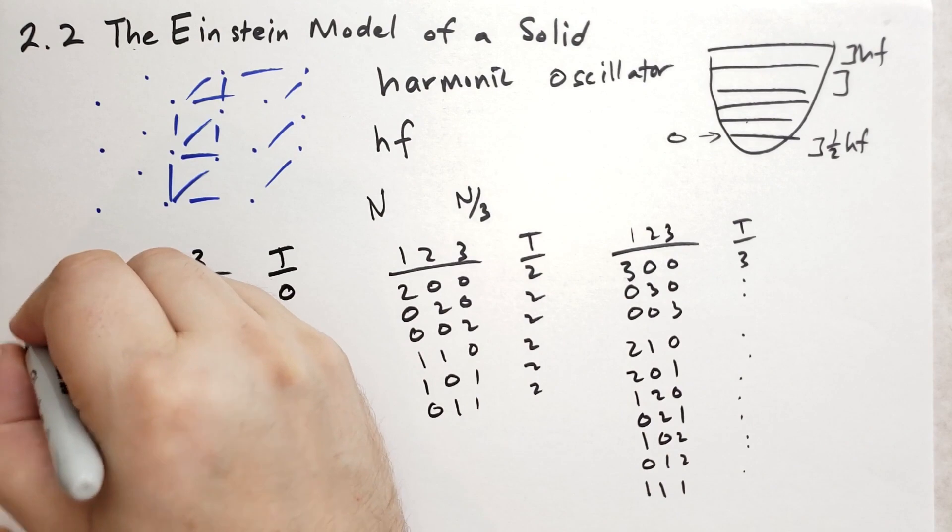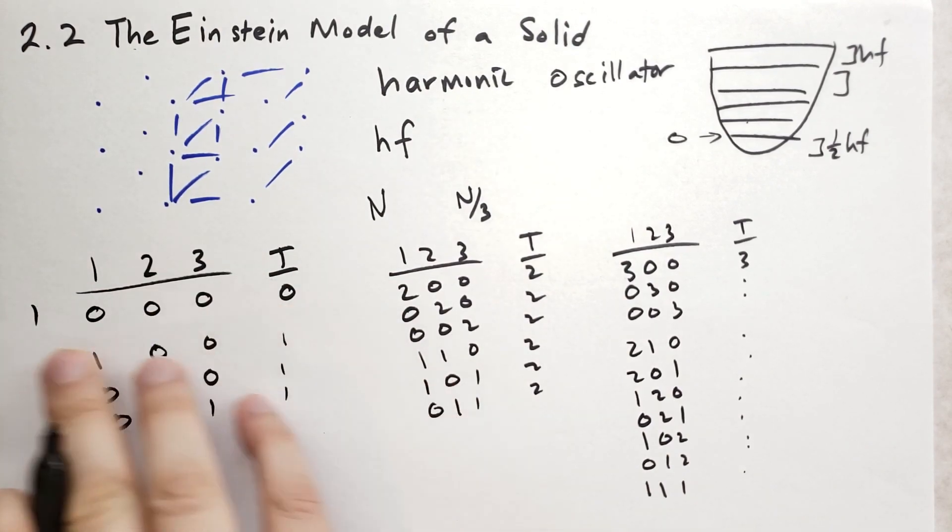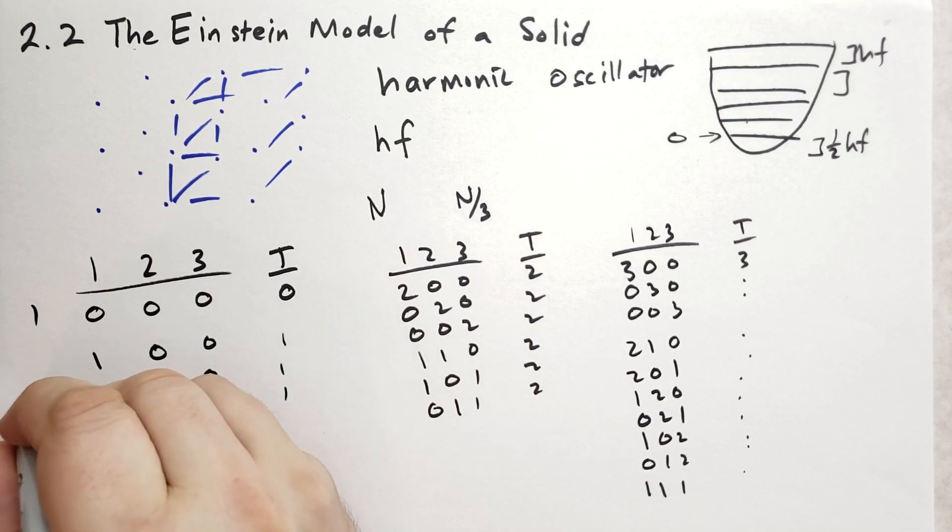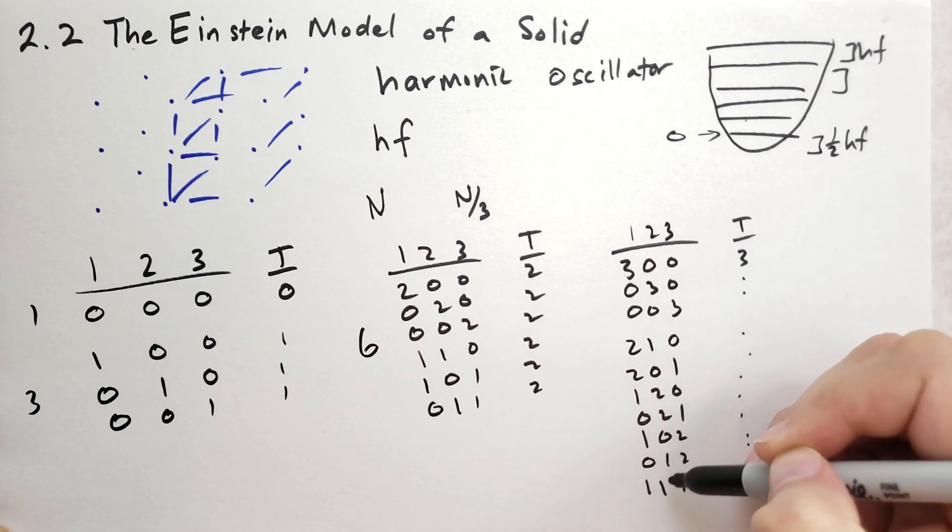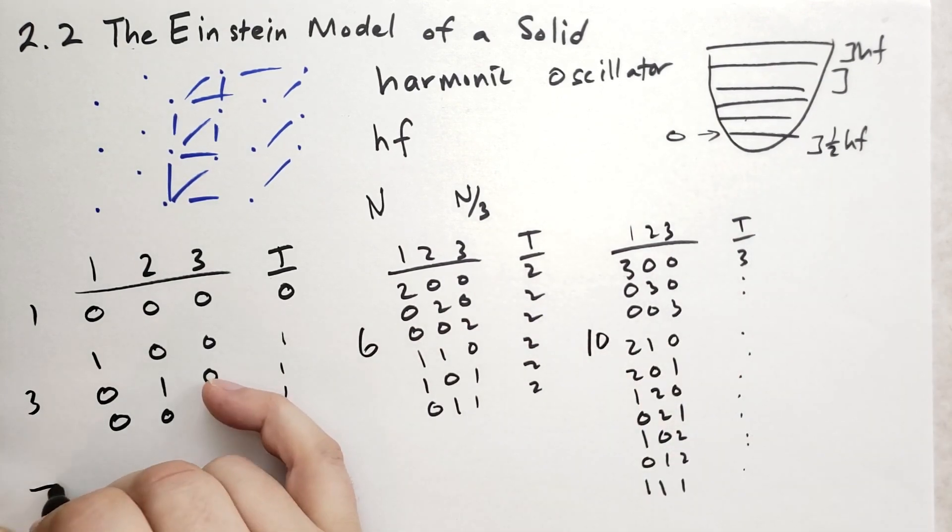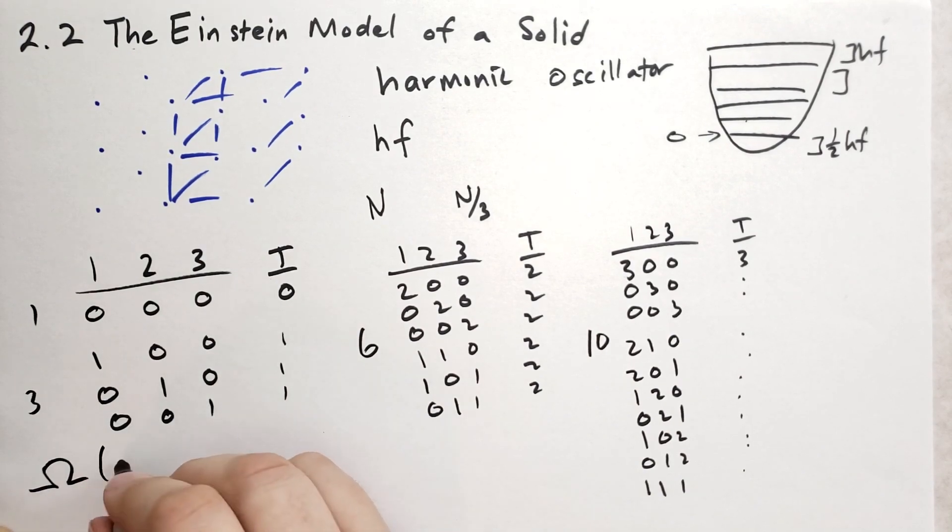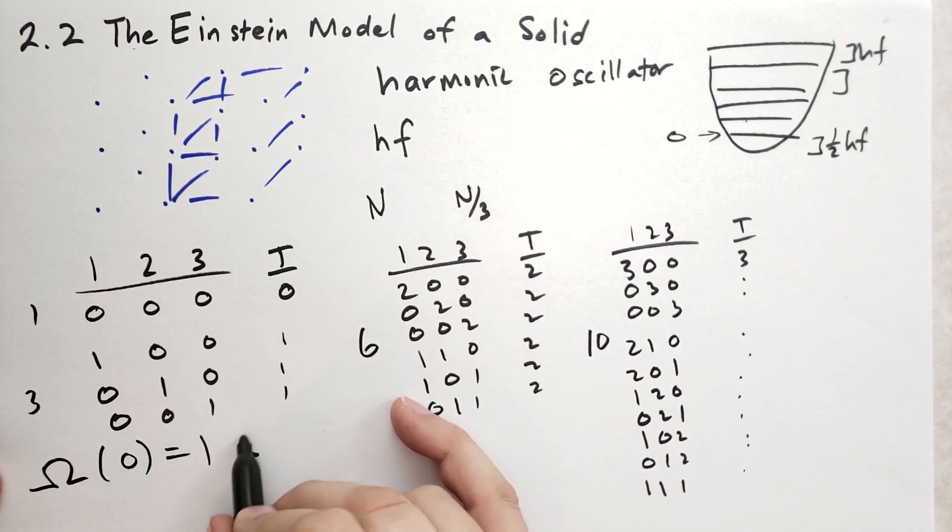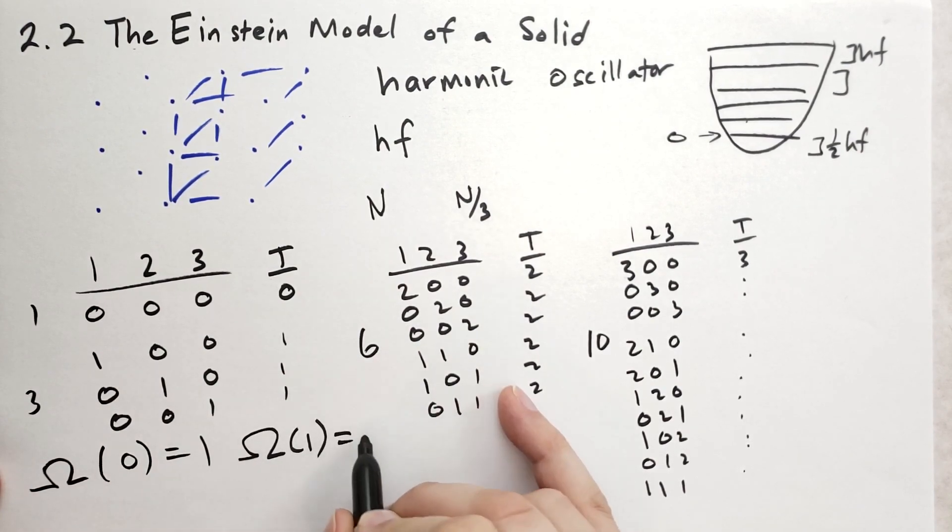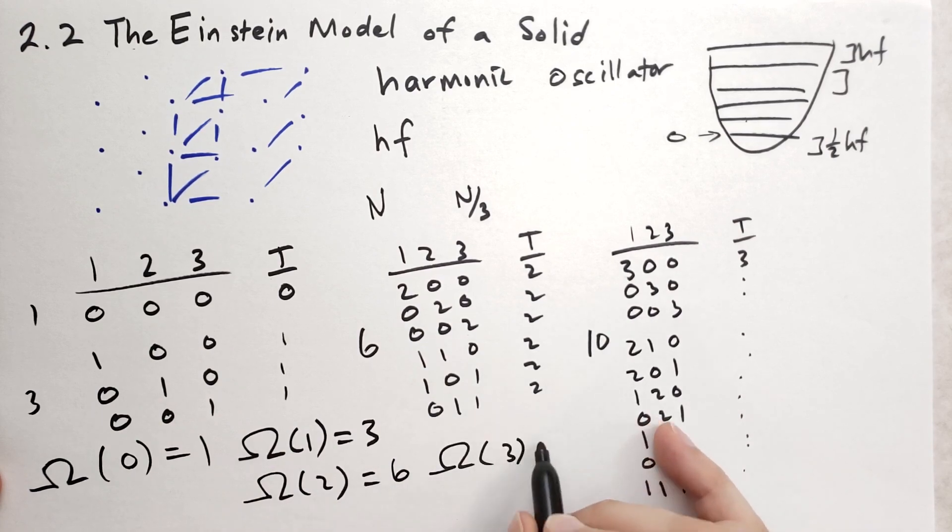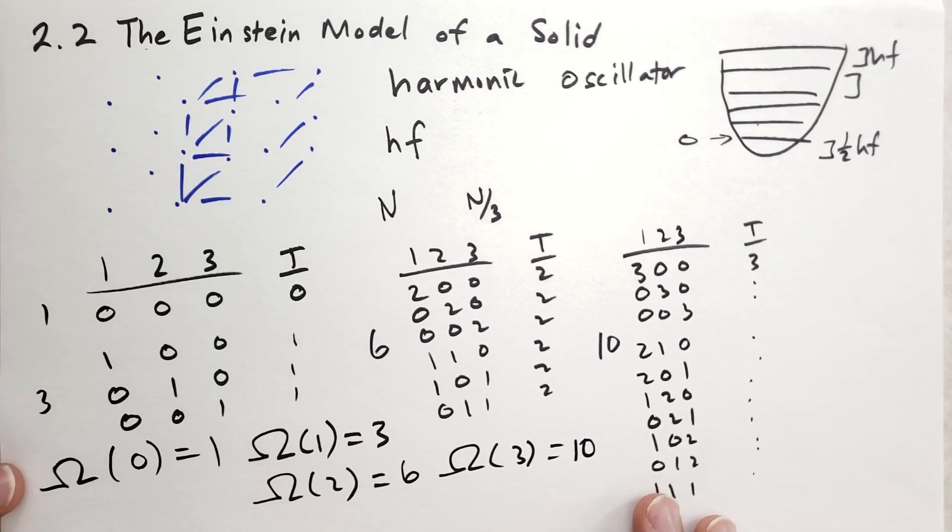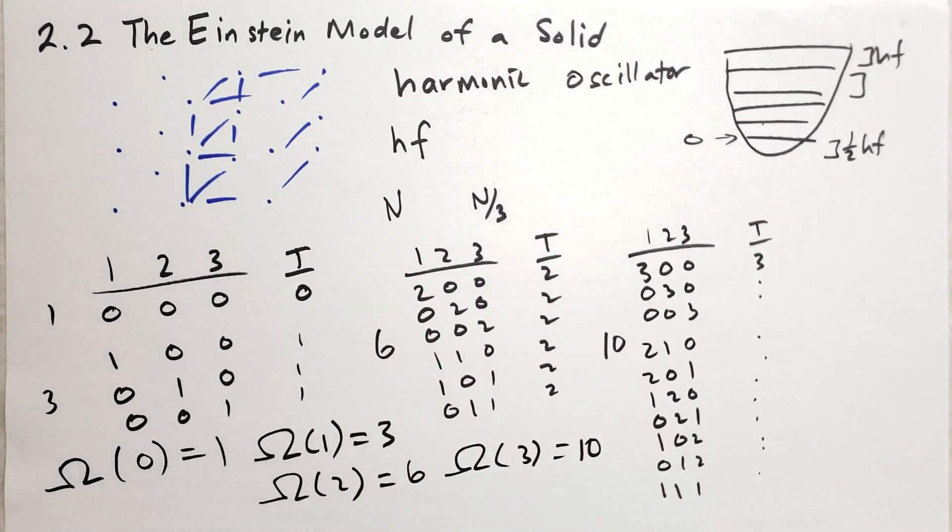For this microstate, there's only one. For this macrostate of zero total energy, there's only one combination. For three energy, there's three combinations. This one has six, and this one has 10 possibilities. So we'll use omega again. Omega with zero total energy has only one configuration. Omega with one total energy has three configurations, three microstates. Omega with two units of energy has six. And then finally, omega of three has ten. So we're just counting the number of microstates for each of these macrostates.